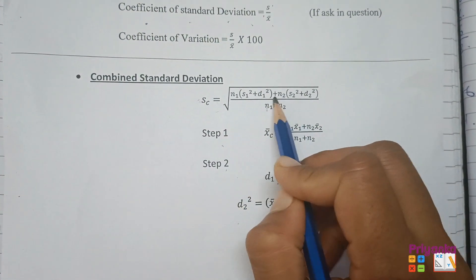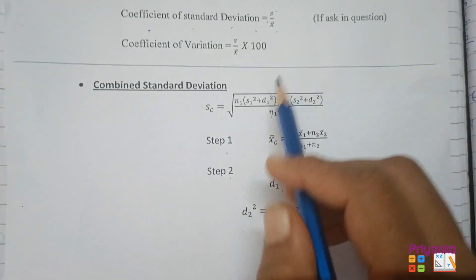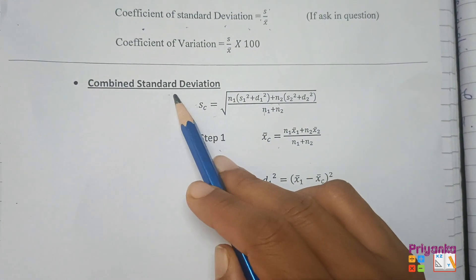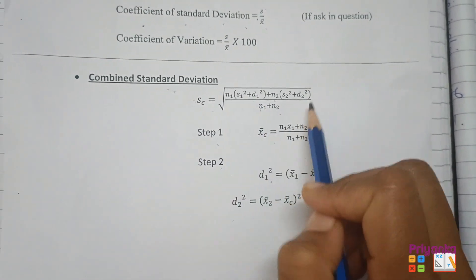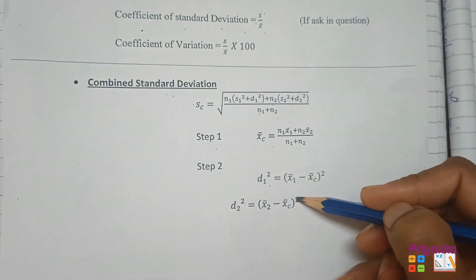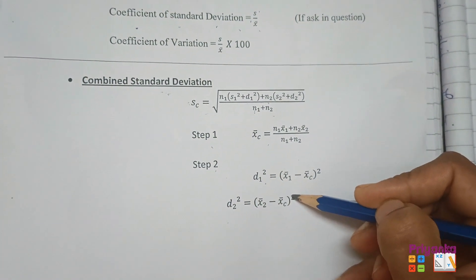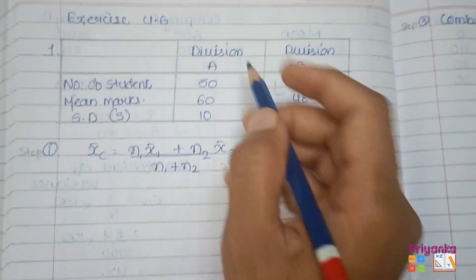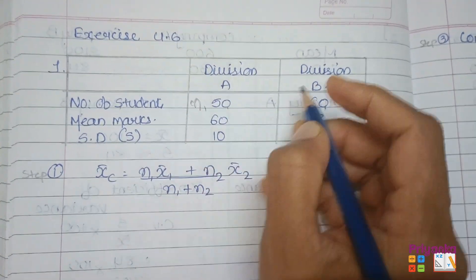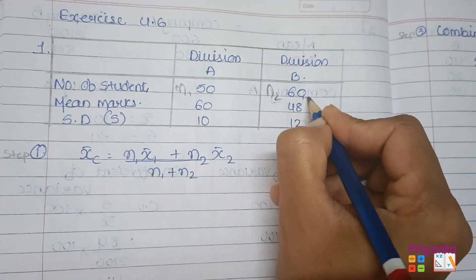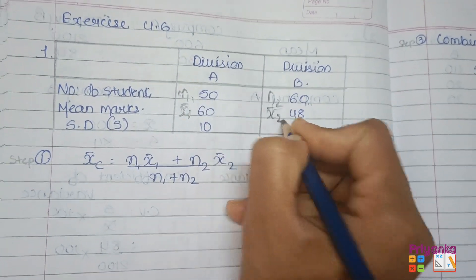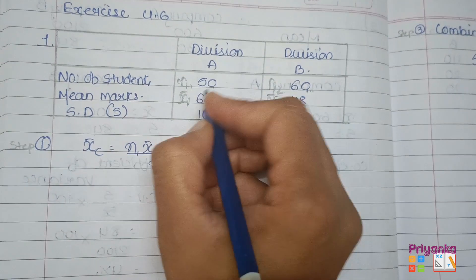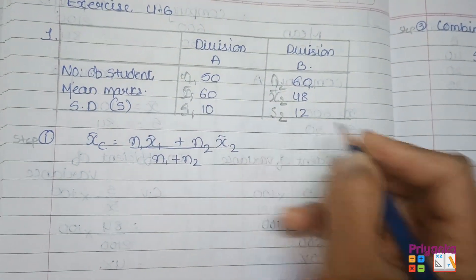Here you can see n1 and n2. In each question asking for combined standard deviation, the comparison of two divisions will be given — with n1, n2, standard deviation, and d values. Now, from the table: number of students n1 = 50 and n2 = 60 for the second division. Mean marks: mean1 and mean2. Standard deviation: s1 and s2.